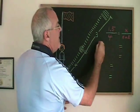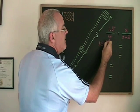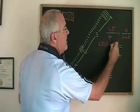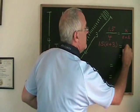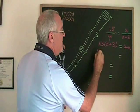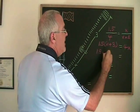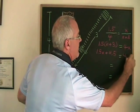Top times bottom gives me 1.5 times x plus 3 and bottom times top gives me 4 times x. Simplifying, this becomes 1.5x plus 4.5 equals 4x.